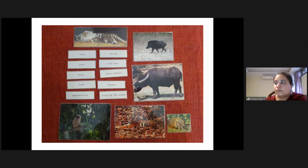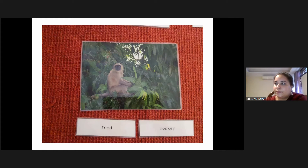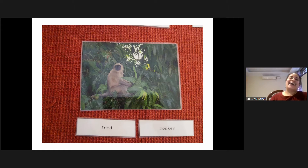Let's see close-up of these pictures — this is the wild boar, food of the tiger. Now monkey — food of the tiger as well. And when you see the monkey, the children may ask: 'How can the tiger even get up the tree and hunt a monkey? The monkey is going to jump from tree to tree!' And you say: 'That's interesting — let's find out!'